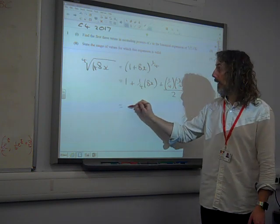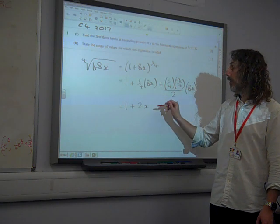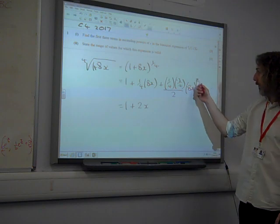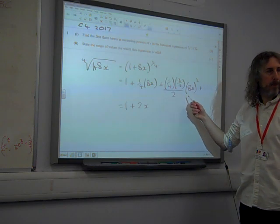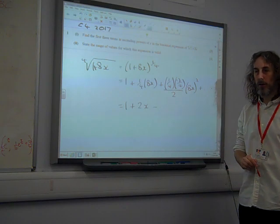So, the marks here were allocated as being 1 mark for 1 plus 2x, which you get for the 1 plus a quarter of 8x. The second mark was for that expression appearing, and the third mark was for simplifying that expression correctly.